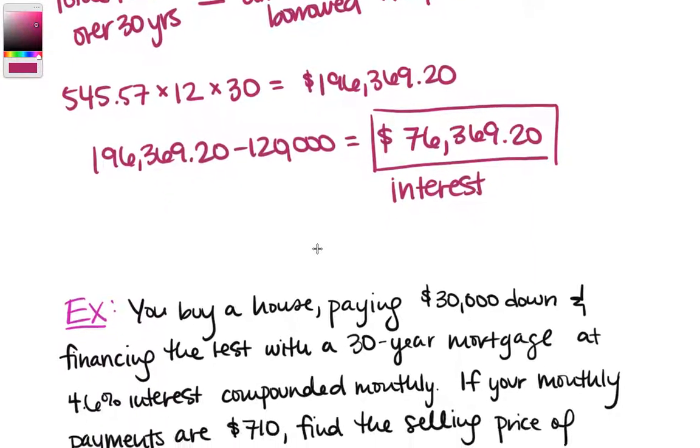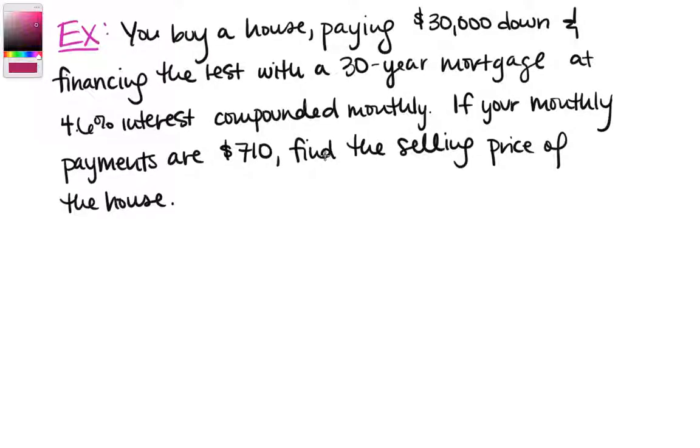Let's do one more example using this. This one is a little different. We buy a house paying $30,000 down, and we finance the rest with a 30-year mortgage at 4.6% interest compounded monthly. If your monthly payments are $710, find the selling price of the house. Let's remind ourselves of our formula. M is big P times little p times one plus little p to the t over 1 plus little p to the t minus one.